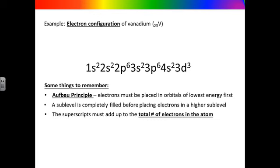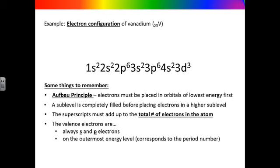The superscripts must add up to the total number of electrons in the atom. Notice that the superscripts add up to the atomic number of vanadium: 2 + 2 + 6 + 2 + 6 + 2 + 3 equals 23. The valence electrons — the electrons on the outermost energy level — are always s and p electrons. For example, vanadium has two valence electrons located on the 4s sublevel, because energy level 4 is the highest energy level written. Notice that vanadium is on the fourth period in the periodic chart, which corresponds to the energy level on which the valence electrons are located.